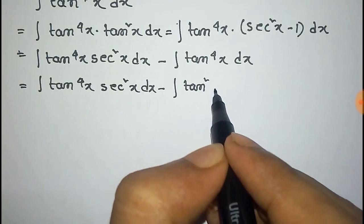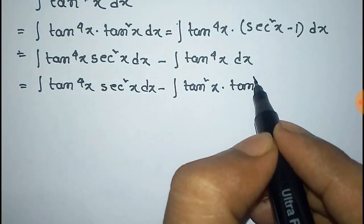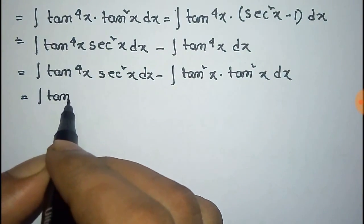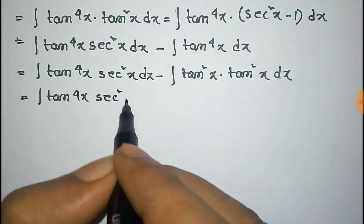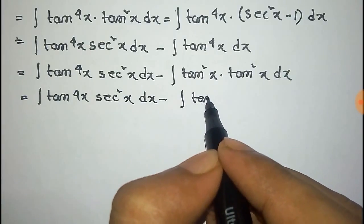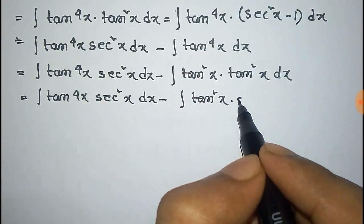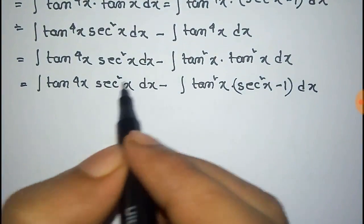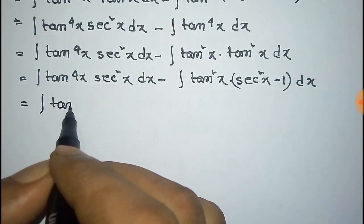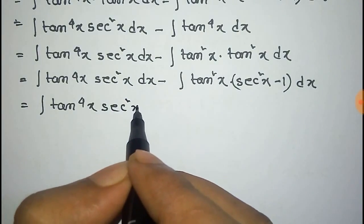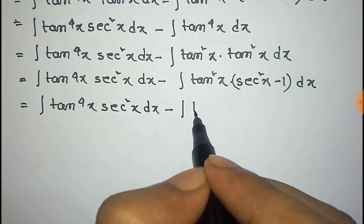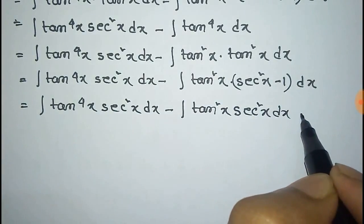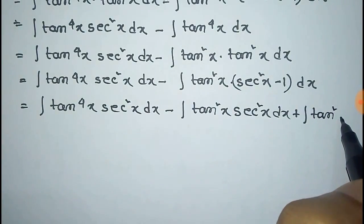Now we can write tan⁴x as tan²x into tan²x. This tan²x can be written as sec²x minus 1. And this can be written as: integration of tan²x into sec²x dx, plus integration of tan²x dx.